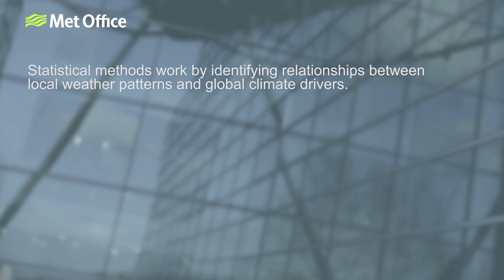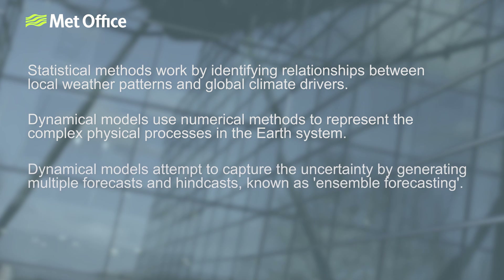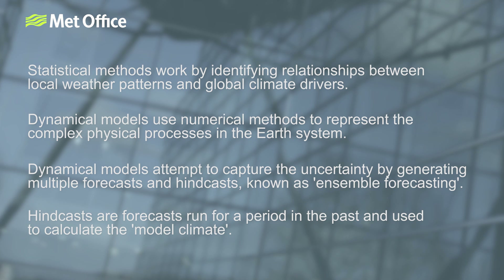We've come to the end of this section. Big thanks to both Phils — we've certainly covered a lot. We've learnt how statistical methods work by identifying relationships between local weather patterns and global climate drivers, whereas dynamical models use numerical methods to represent the complex physical processes in the Earth system. Dynamical models attempt to capture uncertainty by generating multiple forecasts and hindcasts, known as ensemble forecasting. Hindcasts are forecasts run for a period in the past and are used to calculate the model climatology. Join us again in the next video when we'll explain how seasonal forecast output is presented and how to assess forecast accuracy and skill.